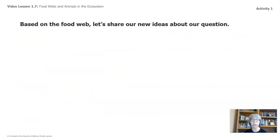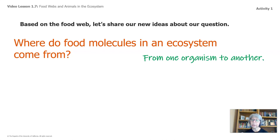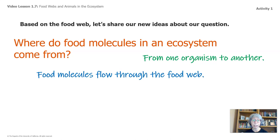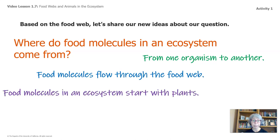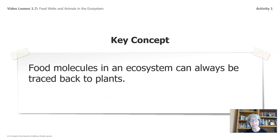Based on the food web, let's share our new ideas about our question. Where do food molecules in the ecosystem come from? Food molecules flow through the food web, and food molecules in an ecosystem start with plants. This is a key concept: food molecules in an ecosystem can always be traced back to plants. Write that one down — that's important.